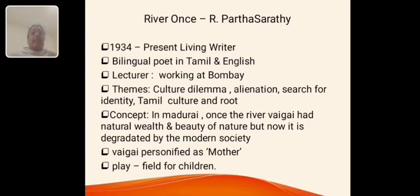The next poem, River, is by R. Parthasarathi. He was born in the year 1934 and is a present living writer. He is a bilingual poet in Tamil and English, and is now working as a lecturer at Bombay. He discussed the concepts of cultural dilemma, alienation, search for identity, and Tamil culture and its roots. In the poem River, he discussed the situation of the Madurai Vaigai River — once upon a time how it looked very wealthy and prosperous, but now how it has been changed and degraded by modern society.